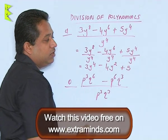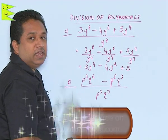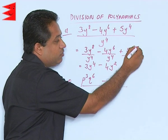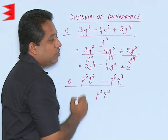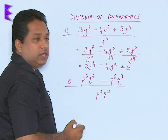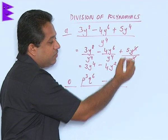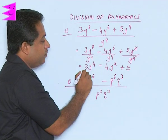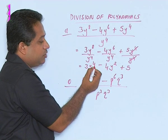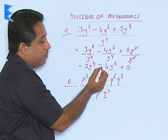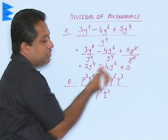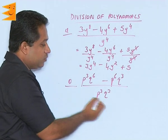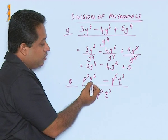Plus 5: here the powers are the same, so 4 minus 4 is 0, and we get y⁰. We know that any number to the power of 0 is 1, or we can just cancel out y⁴ since they are identical terms, leaving only 5. So the answer to this problem is 3y⁴ - 4y² + 5. Similarly, let us see the next question: p³q⁶ divided by p³q³.